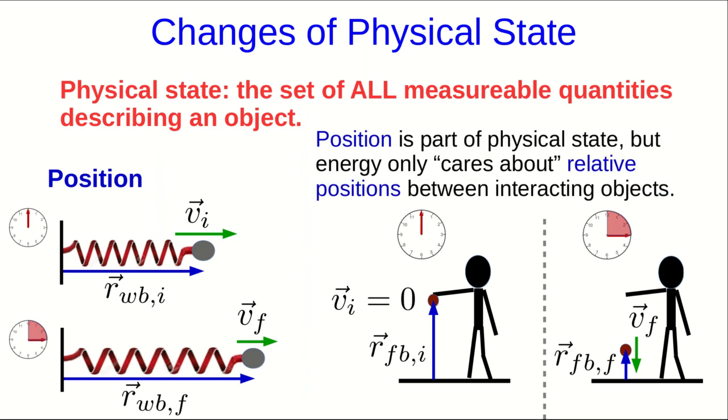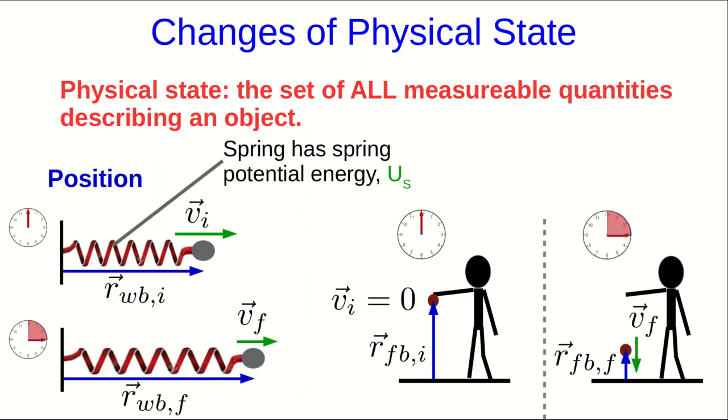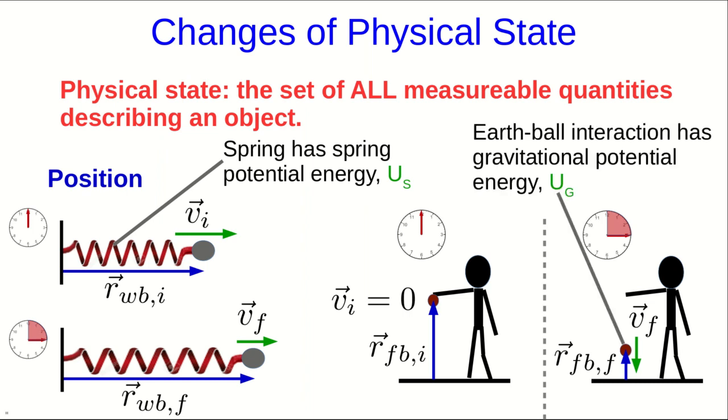So position is part of physical state, but energy seems to only care about relative positions between interacting objects. In the one case, we then identify that there's something we call spring potential energy, which has to do with the length of the spring. And in the other case, we identify that there's something we call gravitational potential energy, which turns out to depend on the height of the ball.